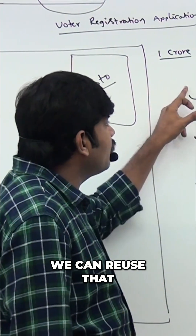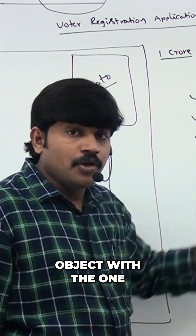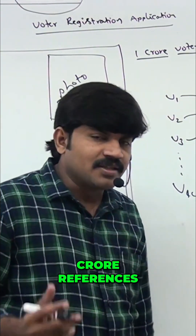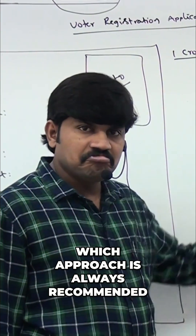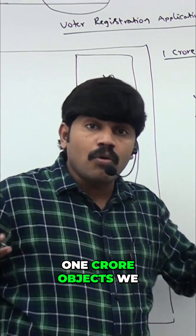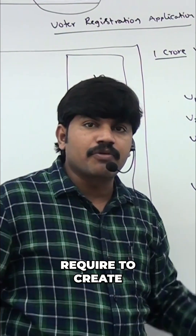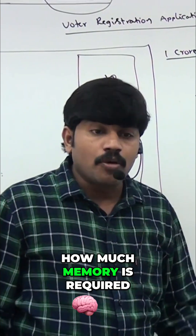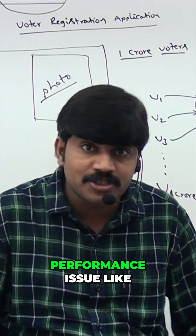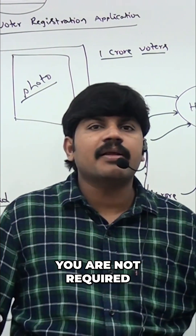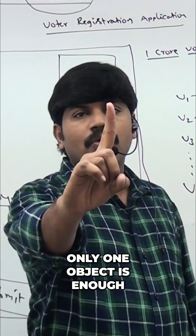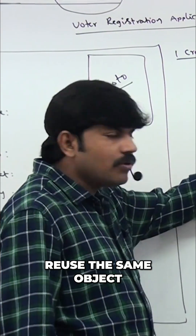We can create only one object and reuse that object with one crore references. Which approach is always recommended? Obviously this approach. Have you observed? If one crore objects are required to create, how much memory is required? How much performance issue — like an array. You are not required to create one crore objects; only one object is enough.